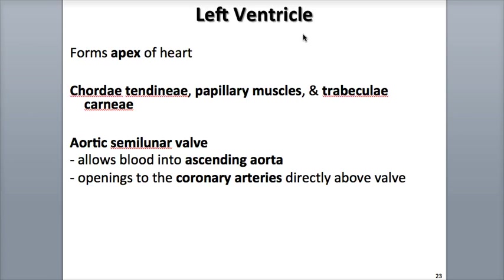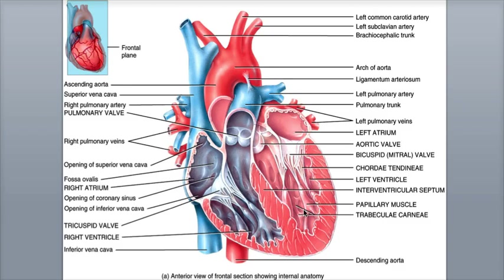The last of the four chambers is the left ventricle, which makes up the apex of the heart and has the thickest walls of the heart's chambers. It contains the trabeculae carneae like the right ventricle and also has chordae tendineae attached to the cusps of the bicuspid valve and papillary muscles. When the oxygenated blood is ejected out of the left ventricle, it flows through the aortic valve, also called the aortic semilunar valve.